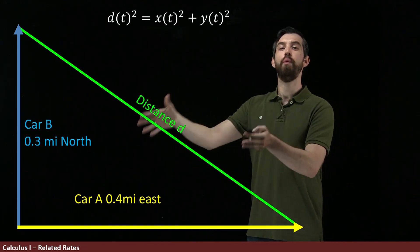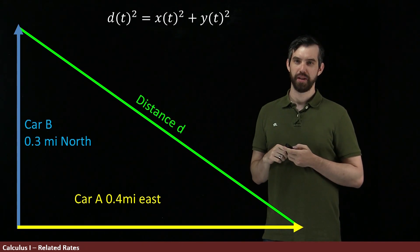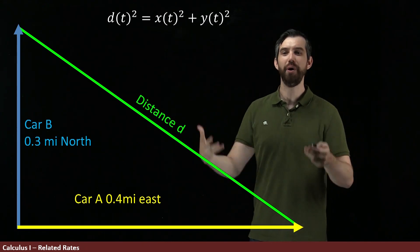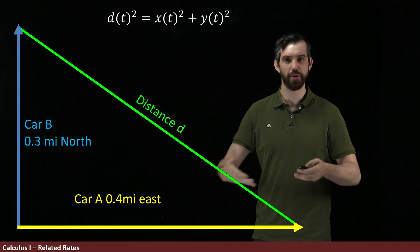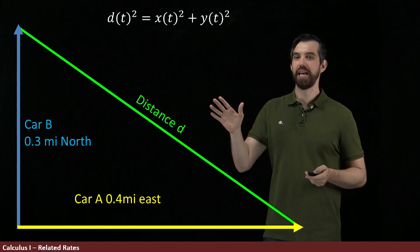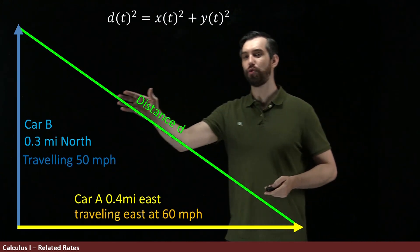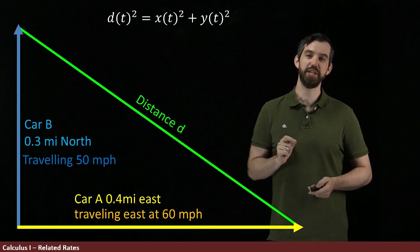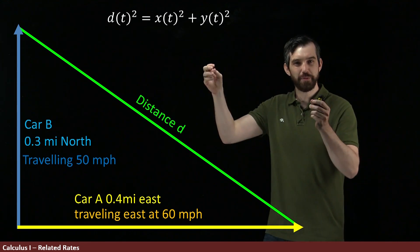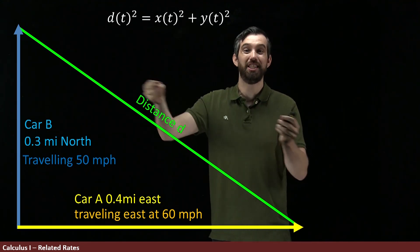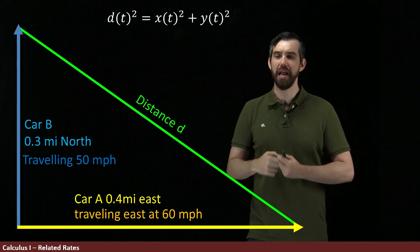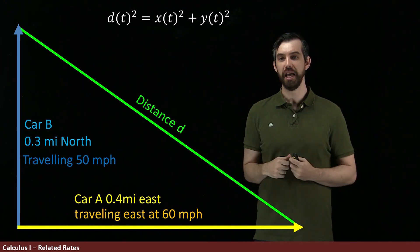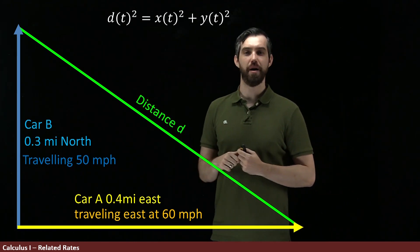So let me add some more information to this picture. I want to describe how it is that my cars are changing with respect to time. So what I'm going to say is that my car B is traveling north at 50 miles per hour, and that my car A is traveling east at 60 miles per hour. So we have this specific time where there's this specific distance they've already traveled, but that they're going at some velocity, in this case the 60 and 50 miles per hour.